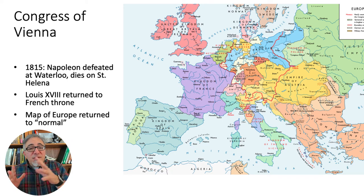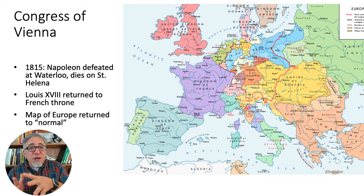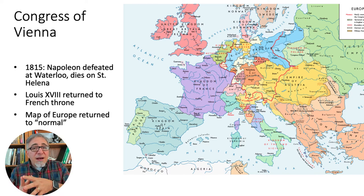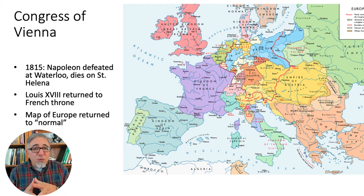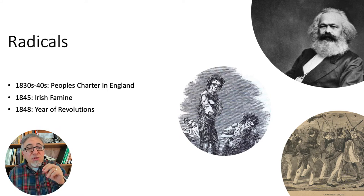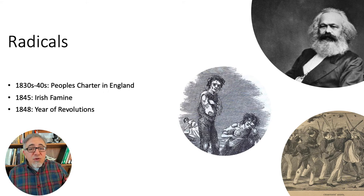Liberals tried to distance themselves from the social leveling and economic redistribution that the Jacobins had attempted. They tried instead to identify themselves with ideas like free trade and a limited voting franchise. But radicals pushed for greater equality and for more rights for regular people, especially workers. For example, British workers agitated for the right to vote and for a social contract called the People's Charter in the 1830s and the 1840s. But conservative Tories blocked the radical Chartists.